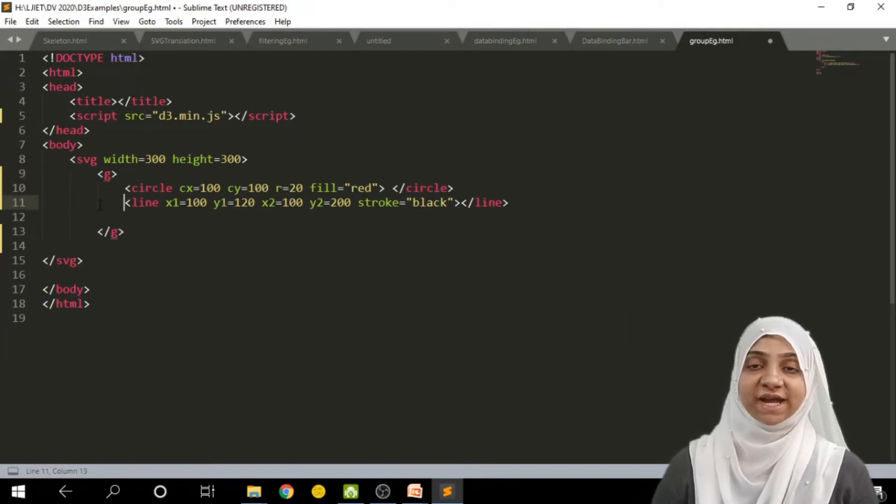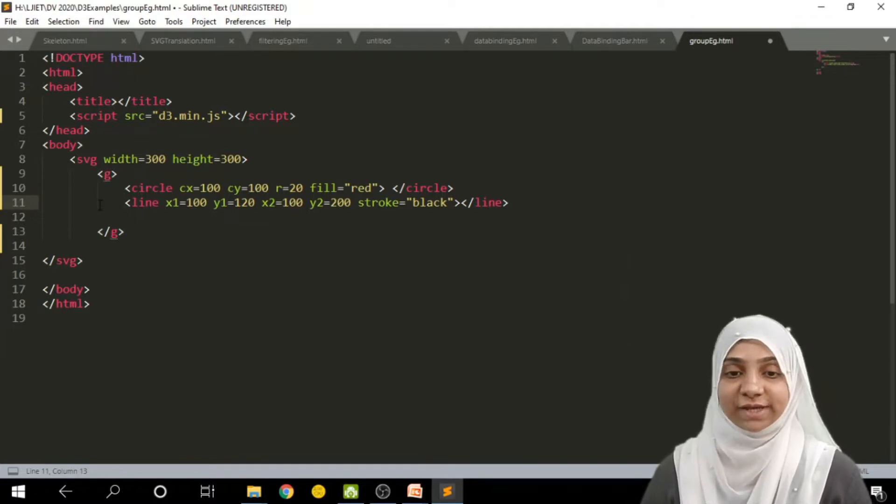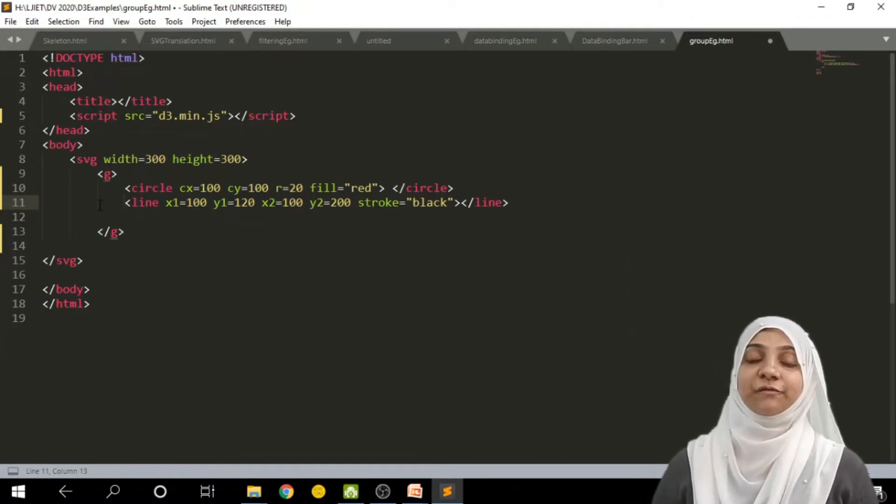we have one SVG tag under which we have one G tag. Now, this G tag includes two elements. First element is circle and another element is line. Circle is at center 100, 100 and having radius of 20, while line is from 100, 120 to 100, 200.